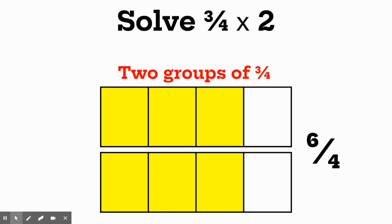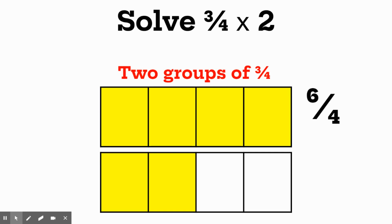Now I'm going to show you how you can use this as a way to help you get better at renaming fractions. Six fourths is an acceptable answer, and we could also rename it. Look at the bottom group of three fourths — I'm going to take one of those pieces away and give it to the top to complete it. I've moved one piece from the bottom to the top. We still have six fourths; the amount hasn't changed, but now we can rename this. The top has four fourths, which is the same as a whole, and the bottom has two fourths. So six fourths is also the same as one whole and two fourths — we renamed that improper fraction as a mixed number.